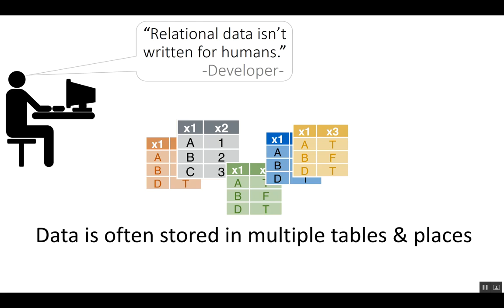Let's talk a little about how data is often stored. A human would want data in a single table where they could see everything, but that's not really the optimal way to store data. Oftentimes data is stored in multiple tables across multiple locations — different CSV files or a database. Relational data isn't written for humans; it's meant to be compact. So we have to take these different tables and join them together using a common key across the tables.